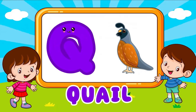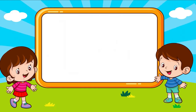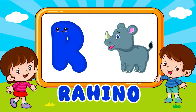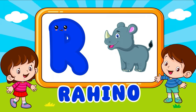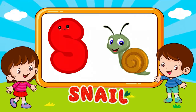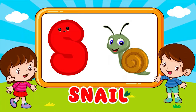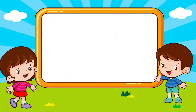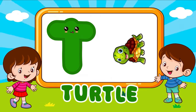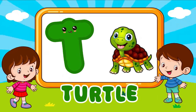Q is for quail. Q, Q, quail, Q is for quail. Q, Q, Q. R is for rhino. R, rhino, R is for rhino. R, R, R. S is for snail. S, snail, S is for snail. S, S. T is for turtle. T, turtle, T is for turtle. T, turtle.